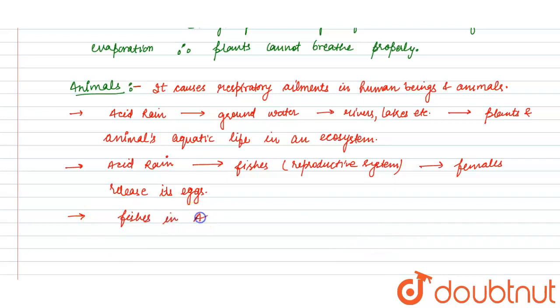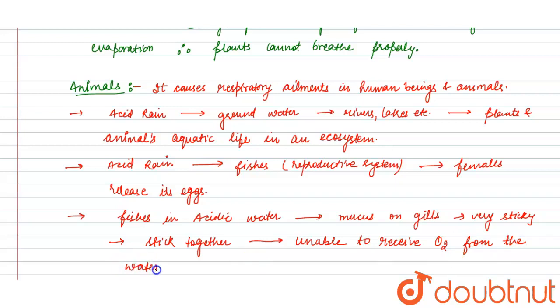Fishes in acidic pH or acidic water, the mucus on their gills becomes very sticky, or they stick together, causing them unable to receive sufficient oxygen from the water, and hence they die.